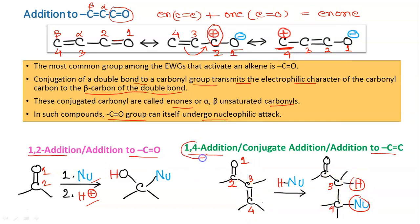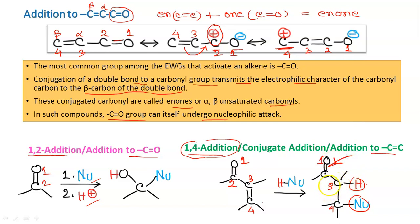When the nucleophile attacks carbon 2 (the carbonyl carbon), it is called 1,2-addition, or addition to C=O. When the attack is at carbon 4, it is called 1,4-addition, also known as conjugate addition. Although it may seem like addition is occurring at positions 3 and 4, the detailed mechanism shows that the addition actually first occurs at oxygen (position 1) and position 4 — hence the name 1,4-addition — and then the hydrogen is transferred to carbon 3.